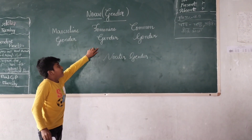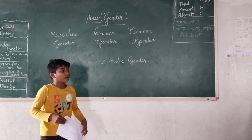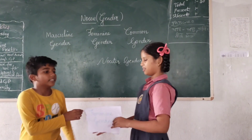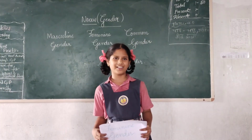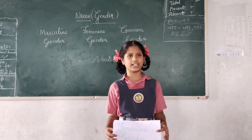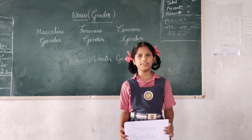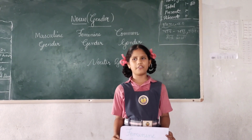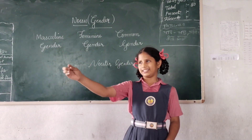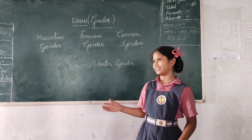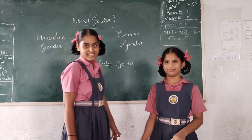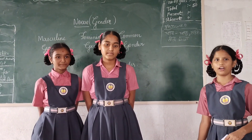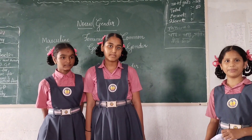Feminine gender is explained by Karuna. My name is Karuna. I am going to explain feminine genders. All females come under feminine genders. For example, Kaitri, Gurga, and Haiswara. These are all female. All females come under feminine genders.